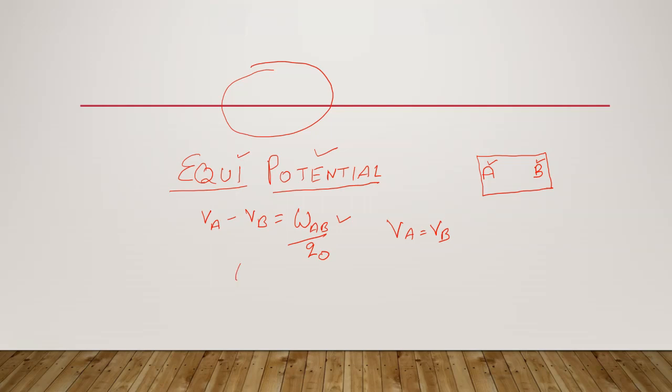Then it means Wab by q0 equals 0, or work done equals 0. That is, the work done in moving a charge within the equipotential surface from one point A to one point B is always 0.